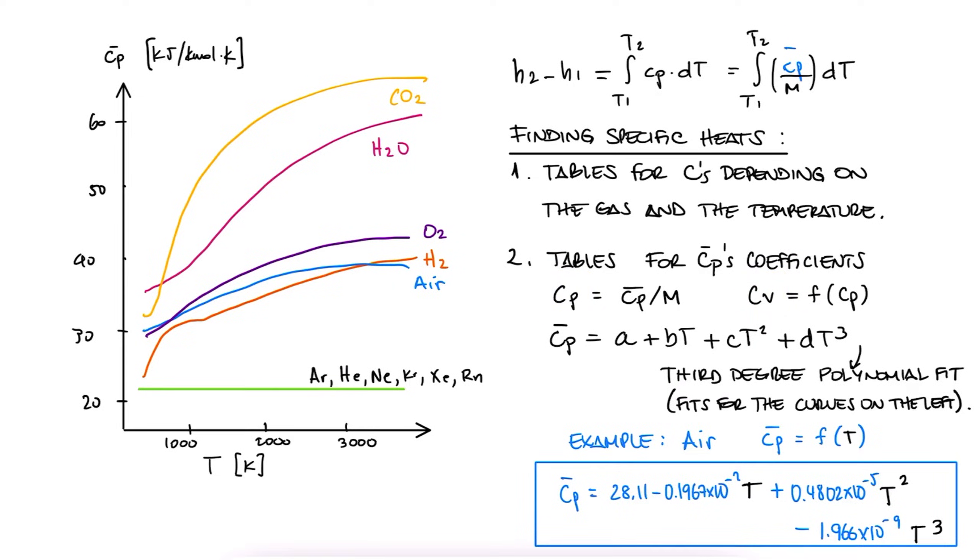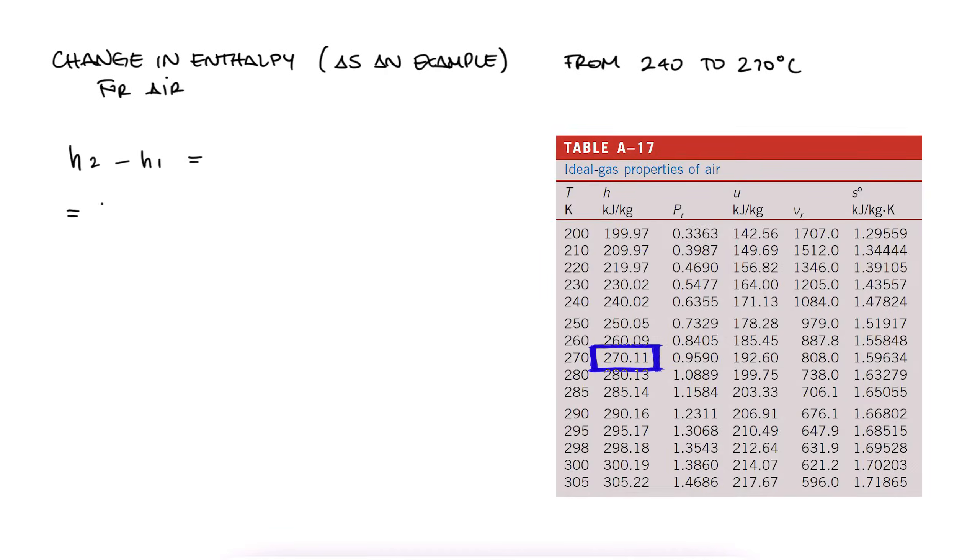So like I said, this integration process is pretty straightforward. However, thermodynamics tables go one step further. It turns out we actually have tables that have already calculated these values for some gases, for example, air. If we wanted to know the enthalpy change between 240 to 270 degrees Celsius, we would write down H for 270 and subtract H for 240, skipping the integration altogether.